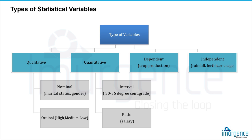From a statistical or analytical perspective, you can bifurcate data into qualitative, quantitative, dependent, and independent variables. It makes more sense to look at data as structured versus unstructured. We won't cover unstructured data in this course. Within structured data, you have numerical data and categorical data — qualitative refers to categorical variables and quantitative refers to numerical variables.